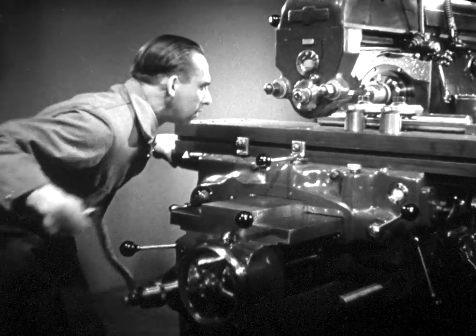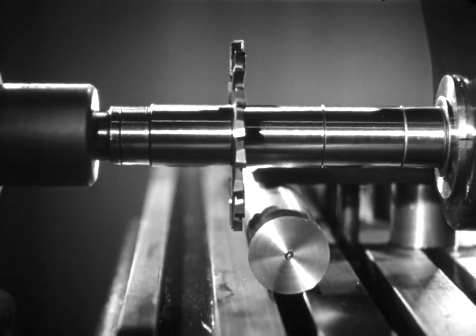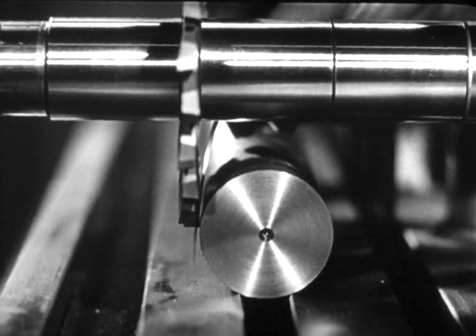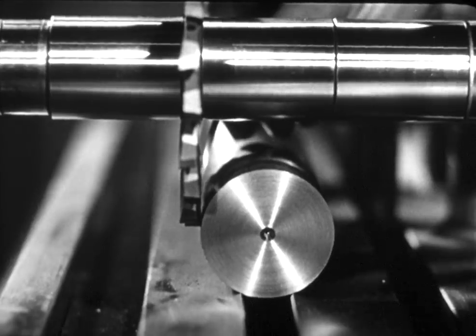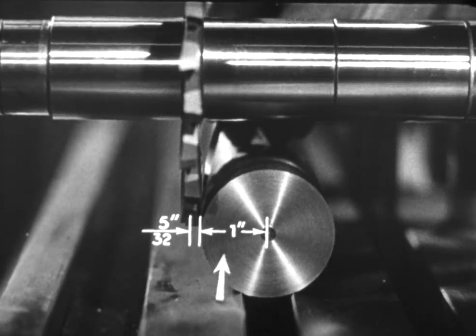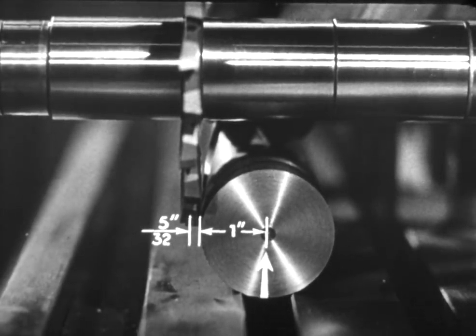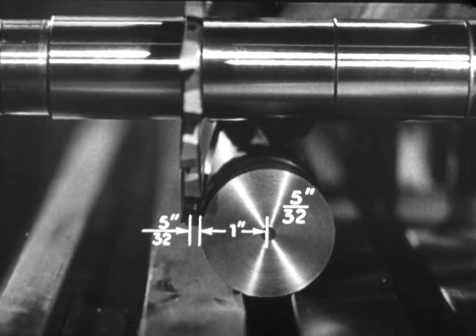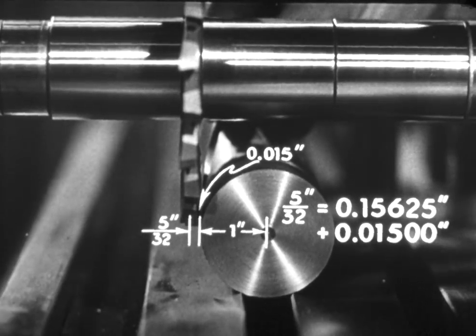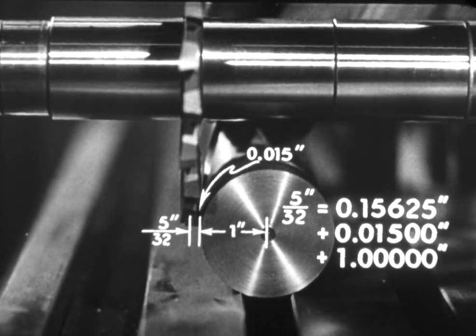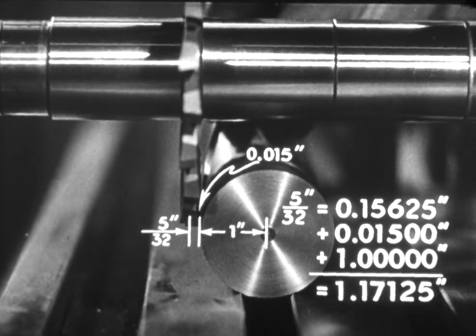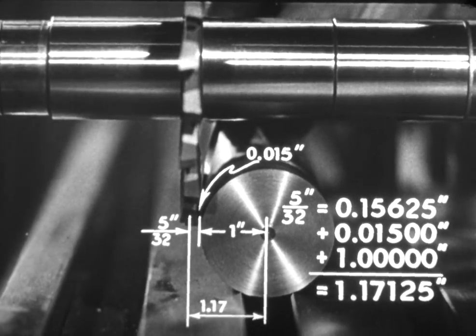To center the cutter for milling the keyway, locate the shaft alongside the cutter, leaving a fifteen-thousandth space. This can be determined with the aid of a fifteen-thousandths feeler. With the cutter and shaft in this position, the distance from the center of the cutter to the center of the shaft is one-half the width of the cutter, five-thirty-seconds, or one hundred fifty-six and a quarter-thousandths, plus fifteen-thousandths, the thickness of the feeler, plus one inch, the radius of the shaft, or a total of one and one hundred seventy-one and one-quarter thousandths inches, the distance the table must be moved in.